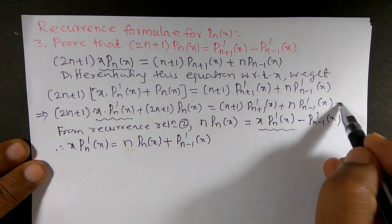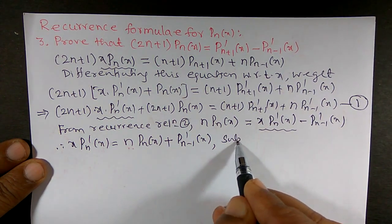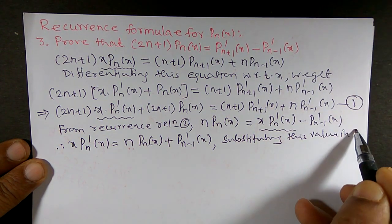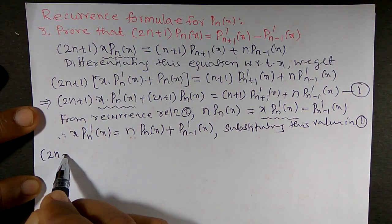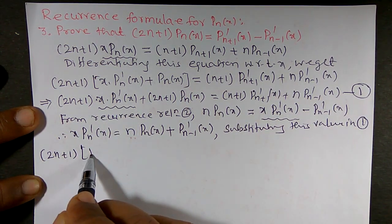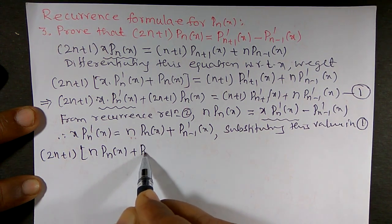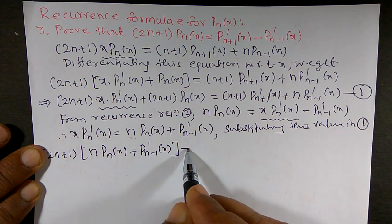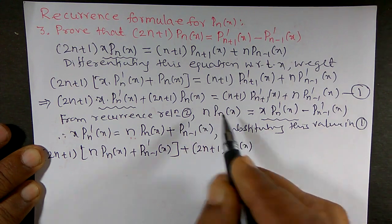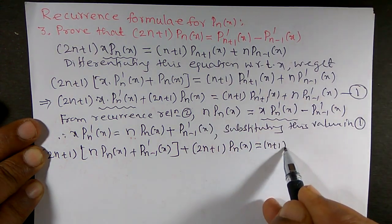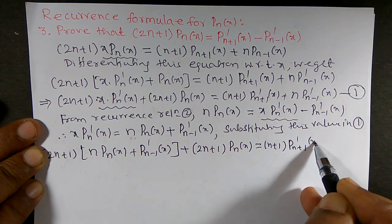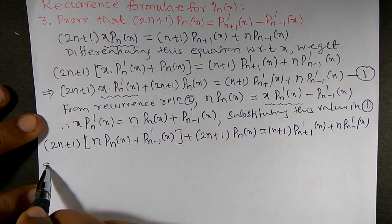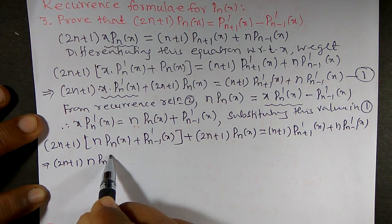Now I am going to substitute this value into equation 1. Substituting x · P'ₙ(x) = n · Pₙ(x) + P'ₙ₋₁(x) into equation 1: (2n+1)[n · Pₙ(x) + P'ₙ₋₁(x)] + (2n+1) · Pₙ(x) = (n+1) · P'ₙ₊₁(x) + n · P'ₙ₋₁(x). Expanding gives (2n+1)n · Pₙ(x) + (2n+1) · P'ₙ₋₁(x) + (2n+1) · Pₙ(x).